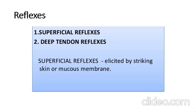We are talking about the motor examination. We have covered tone, power, and bulk. Next is reflexes. Reflexes, as the name shows, are involuntary — not voluntary action, automatic. Any stimulus, if the reflex arc is intact — meaning no damage within the pathway — the reflex occurs. The reflex arc consists of a receptor, afferent signal, a control center, and efferent having effectors.